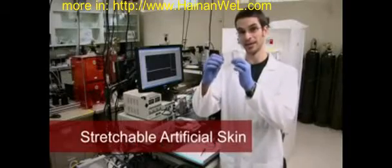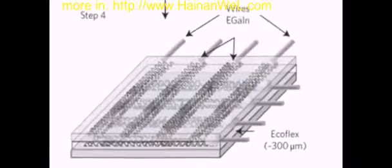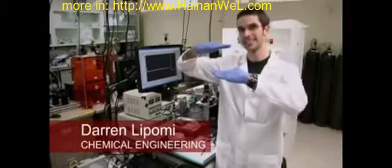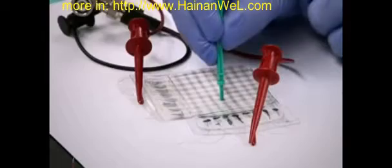This is an 8x8 array of compressible transparent pressure sensors. A capacitor has two conductive parallel plates that when you press on them, the distance between the parallel plates gets closer, and that has the effect of increasing the capacitance of the device.